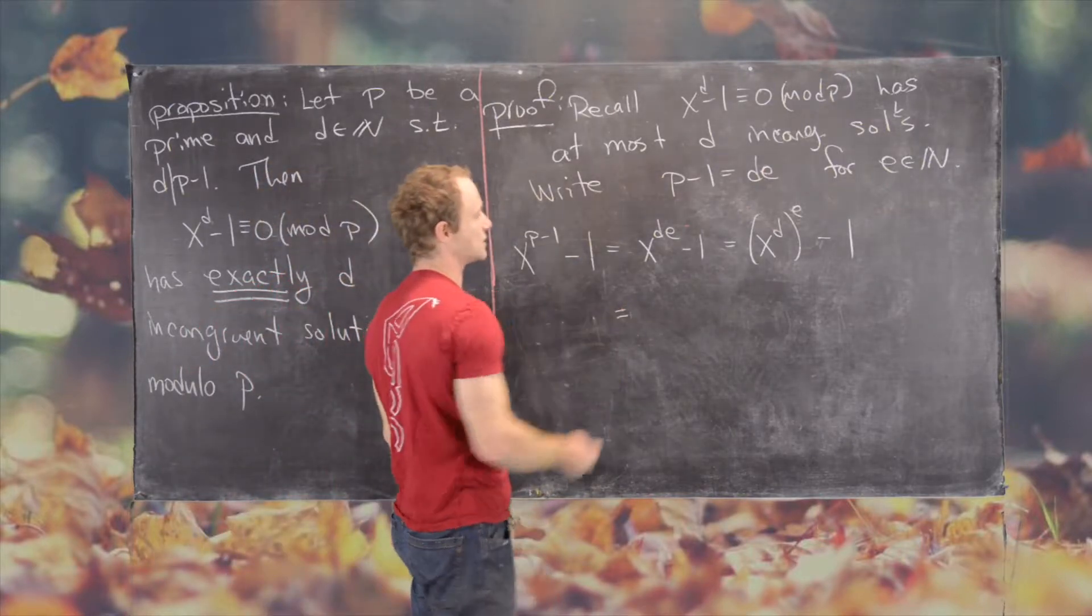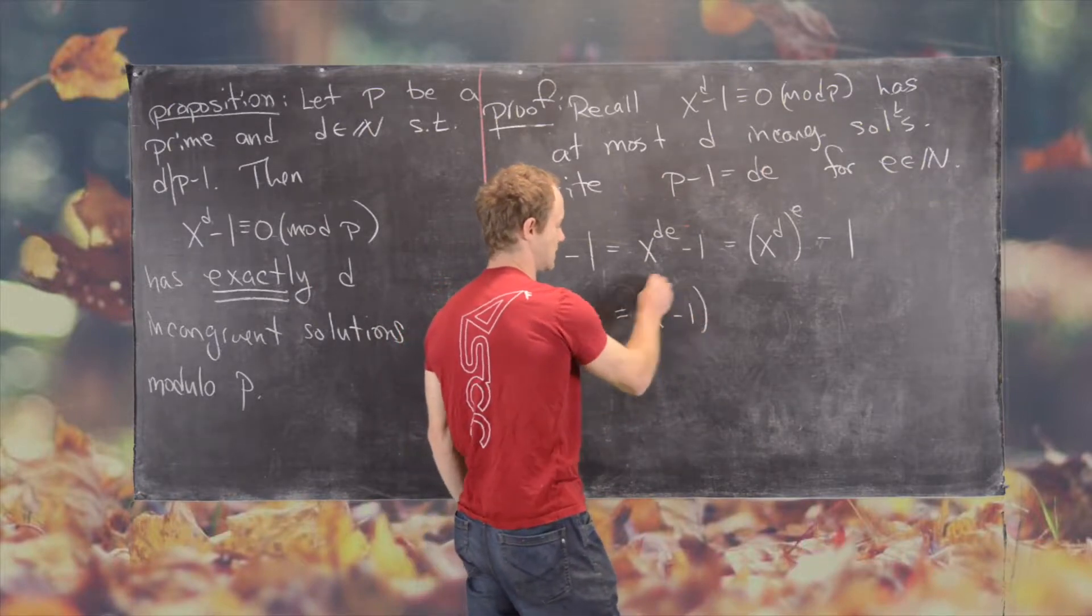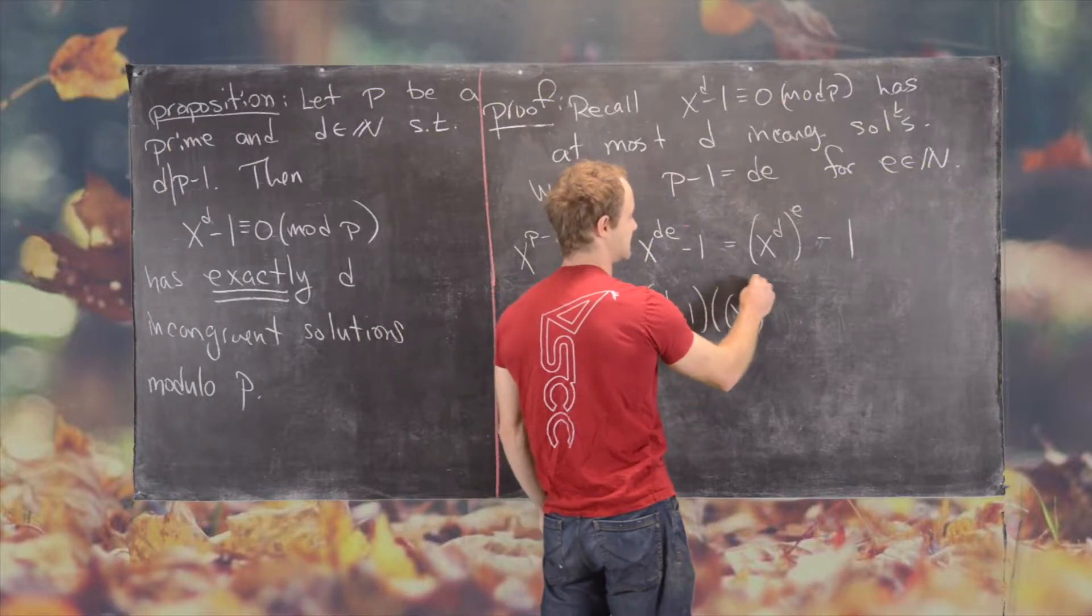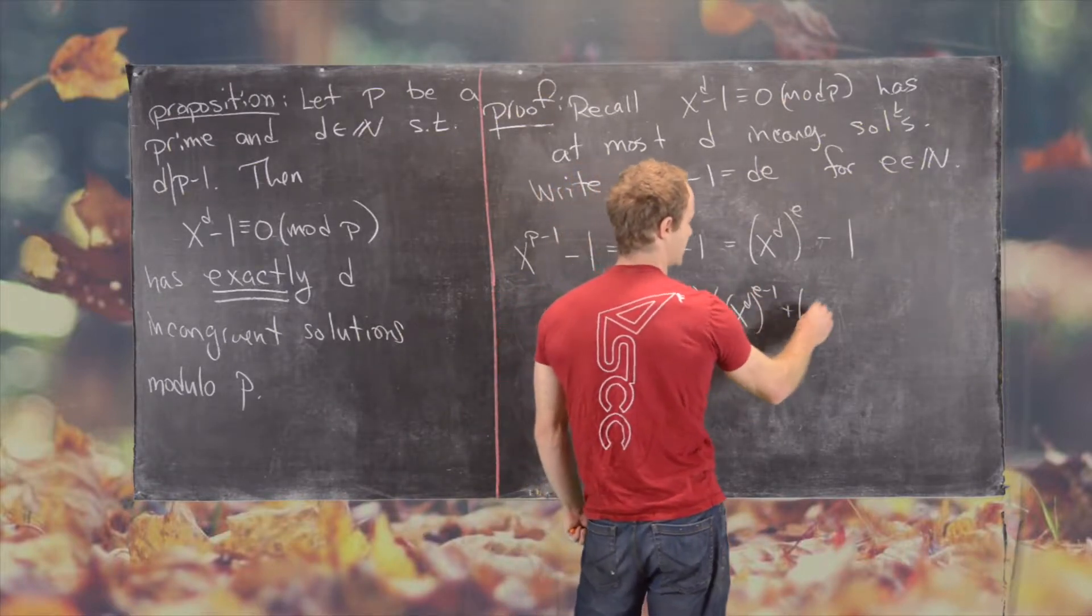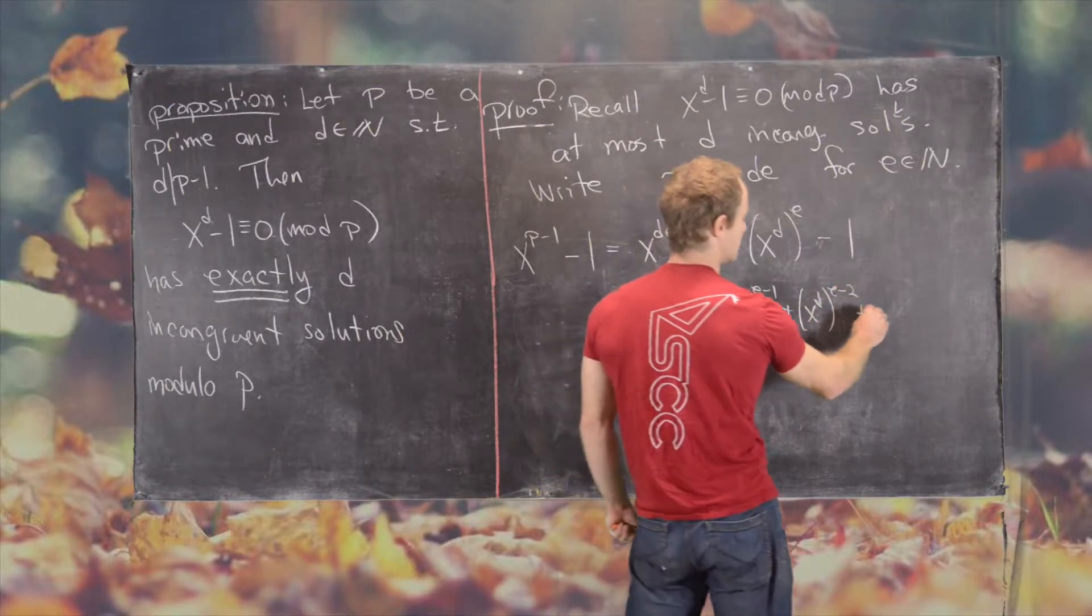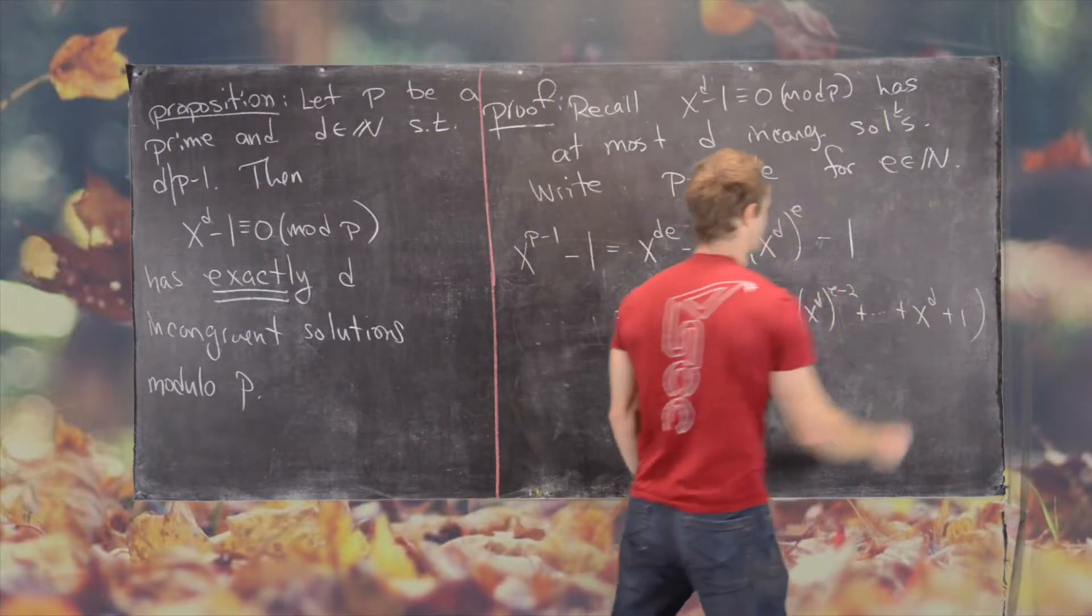So this is equal to x to the d minus 1 times x to the d to the power e minus 1 plus x to the d to the power e minus 2 all the way down to x to the d plus 1.